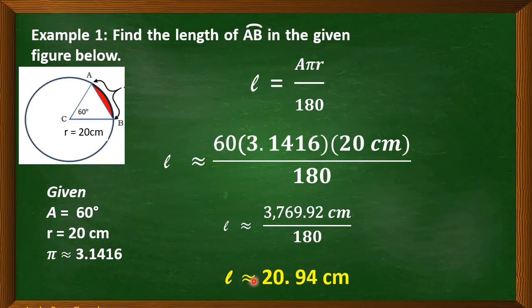Again, we are using the symbol. This one means approximately equal to because we do not get the whole value of our pi. We get only the value of pi up to the 4 decimal places. So, this is now the value of our arc length, 20.94 cm.